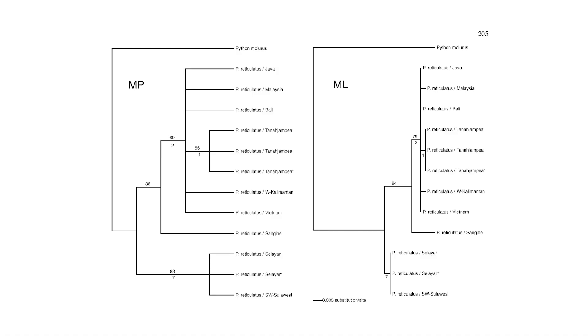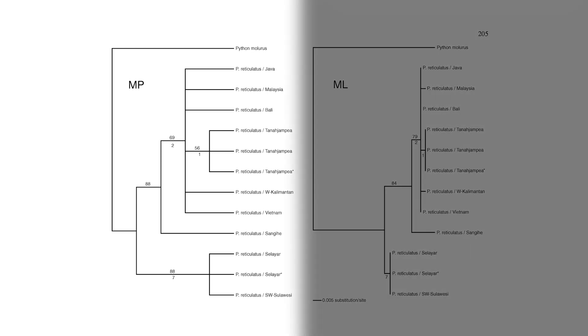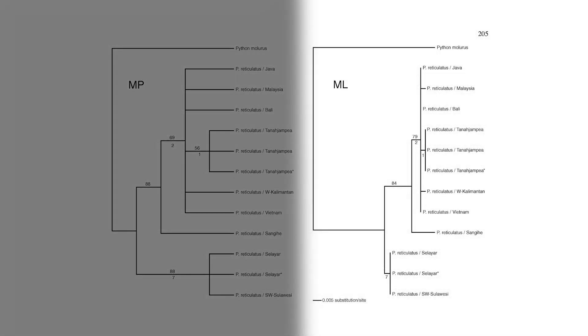There are two different trees created from the data: the maximum parsimony tree and the maximum likelihood tree. We don't really see much difference between them except that the maximum likelihood one looks more at evolutionary changes over time where the other does not. As far as I can tell they're both telling the same story, which means we've probably got something that approximates the truth.